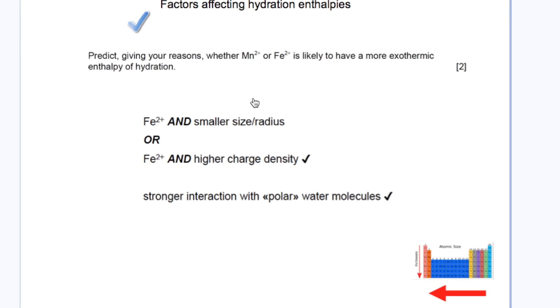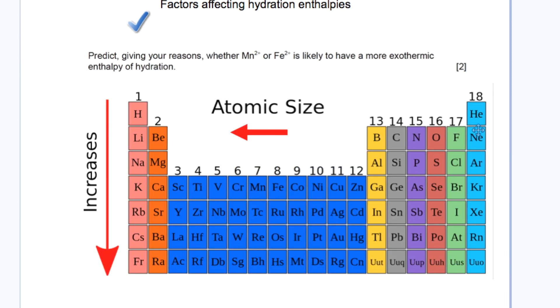Another difficult question was from an obscure area of the syllabus: predict with reasons whether manganese or iron is likely to have more exothermic enthalpy of hydration. The answer relates to size. Iron has a smaller size and therefore higher charge density, with water molecules held more closely to the iron atom. Remember, atomic size increases as you move from neon to lithium, argon to sodium, or krypton to potassium.